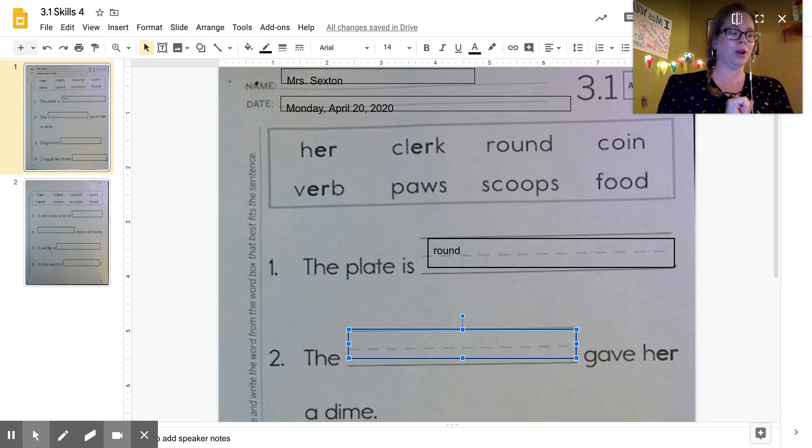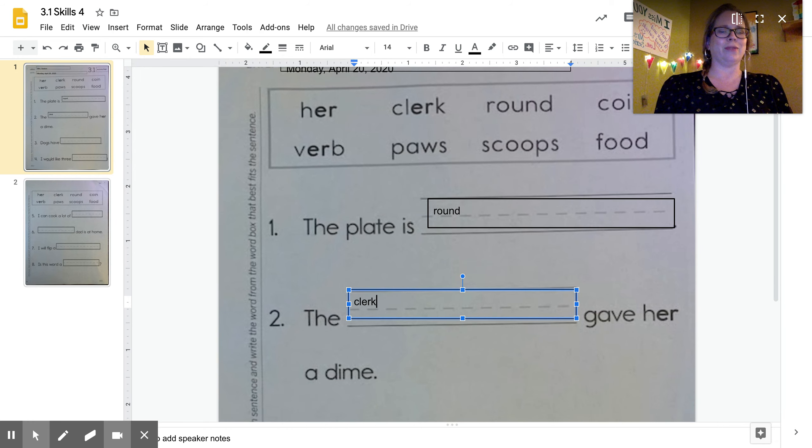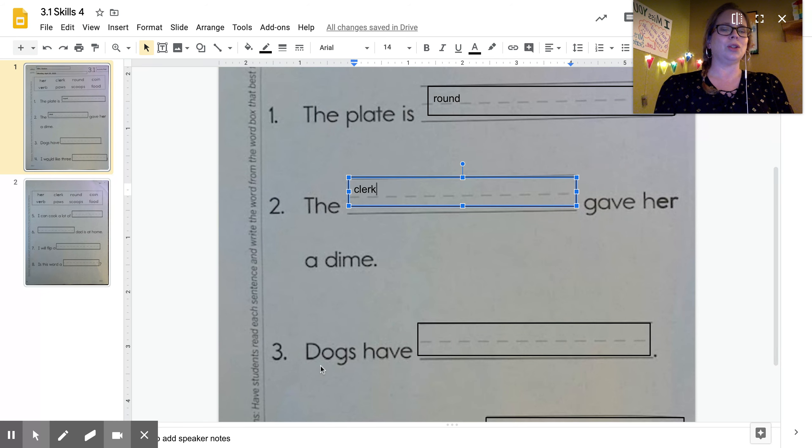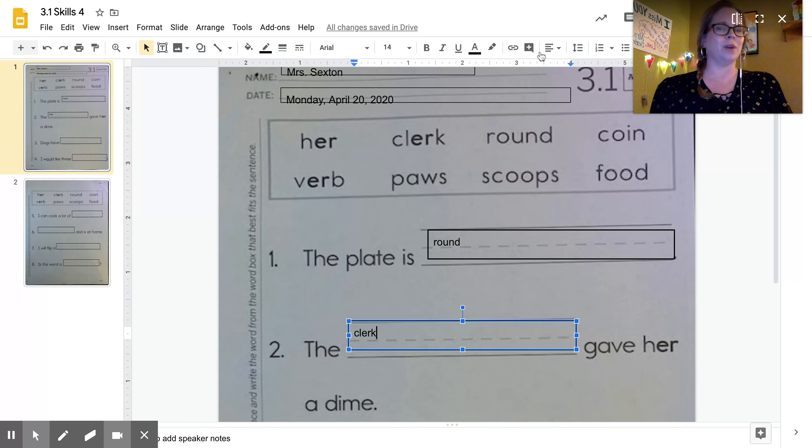I'm going to click inside the box. I'm going to get ready to type. The blank gave her, the blank gave her. Hmm, so I need to find something that means like a person. What's like a person up here? Is it verb, clerk, paws? The blank gave her, click in my box. The clerk gave her, the clerk gave her.